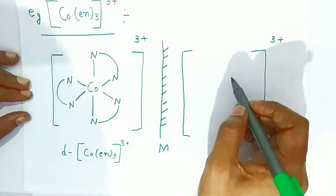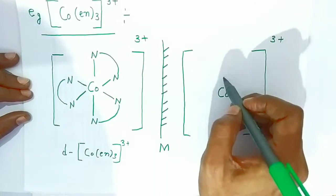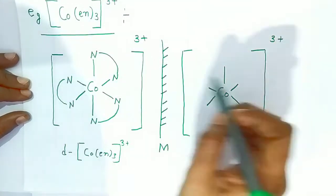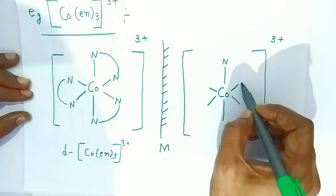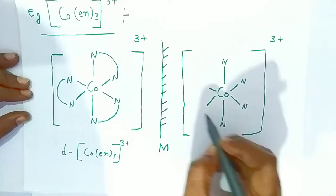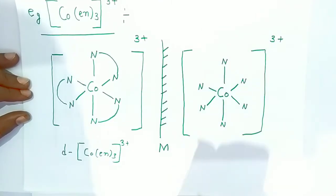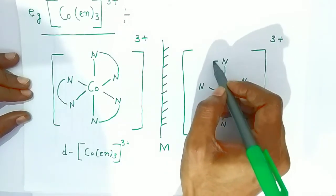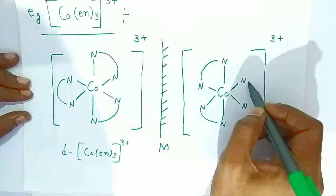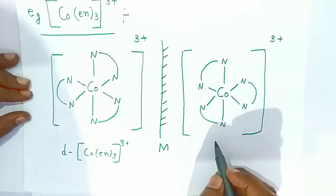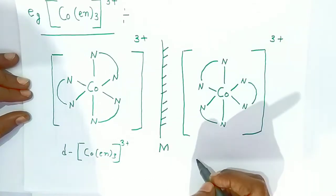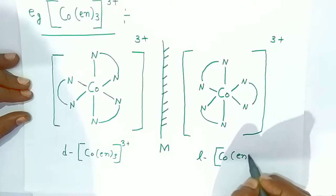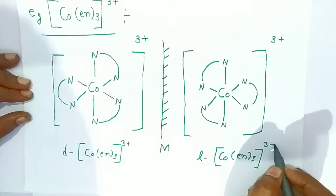For the second optical isomer, cobalt is again at the center in the octahedral arrangement. All nitrogen atoms of the ethylene diamine donate their lone pairs, since ethylene diamine is a bidentate ligand. The mirror image of the first structure is drawn, and this is the levorotatory complex - the l-[Co(en)₃]³⁺ complex. This is how you write the optical isomers in octahedral complexes.